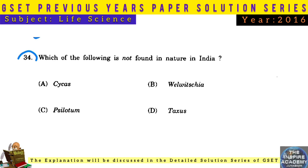Question No. 34: Which of the following is not found in nature in India? Answer: Chkia.